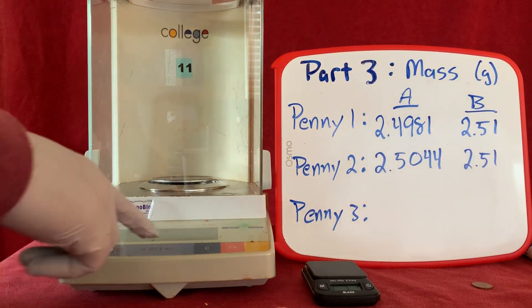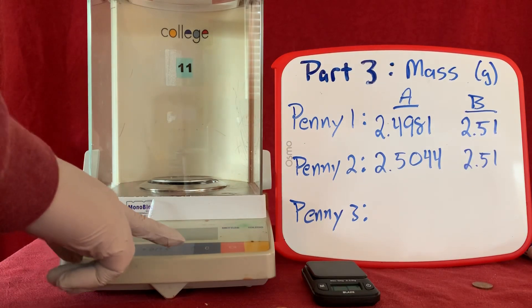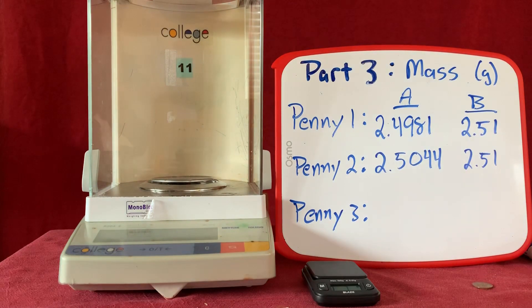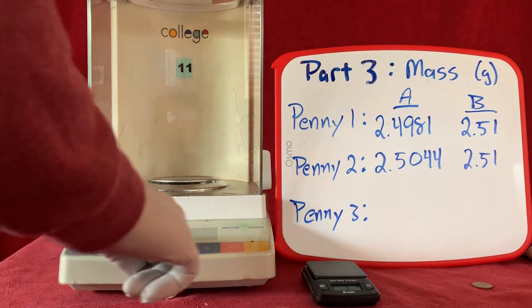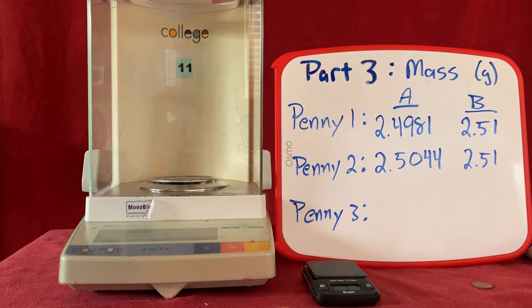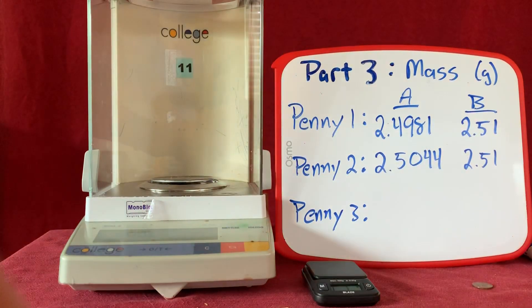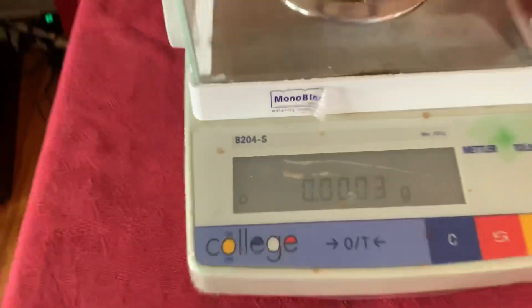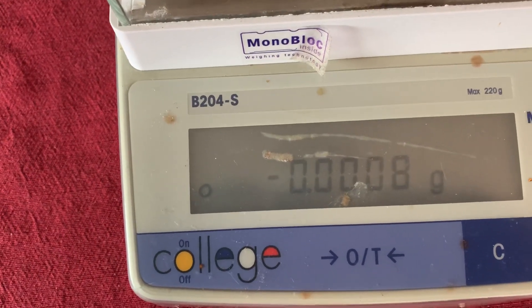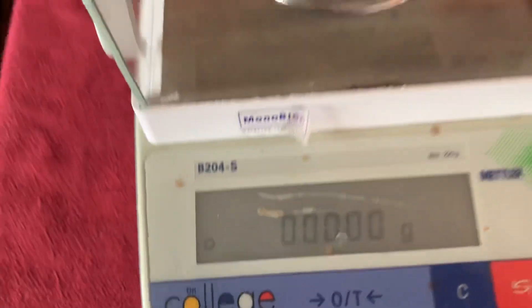And we're going to first tare the balance. We're going to hit the tare, or in this case the zero/T button, and make sure that it resets to zero. I'm going to tell you that it says zero right now. I'm going to show you the measurement. It is reset to zero.